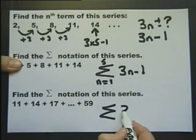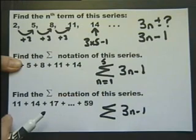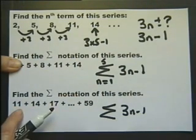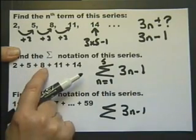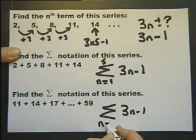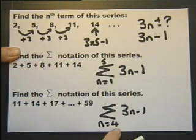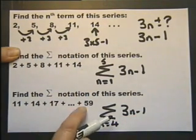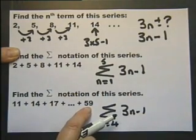Now, the general term, because it is add on three each time. But which term is this? Well it's actually one, two, three, four. It's with N equals four. In other words if you put four into there, three, four is twelve, take away one. You do get eleven. But what's the value of N for this number here?